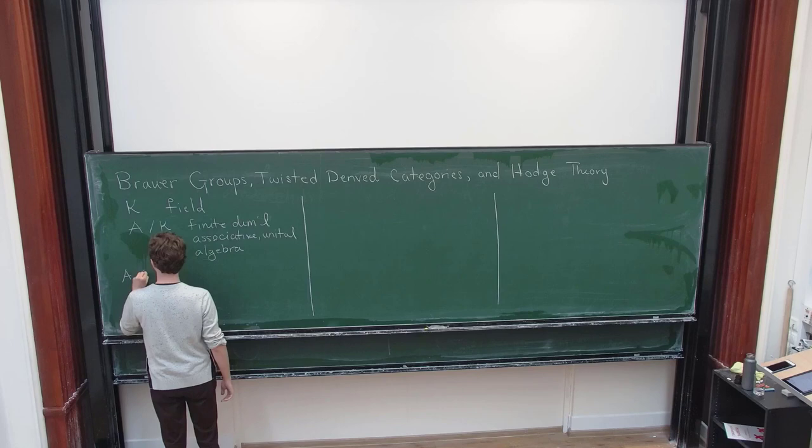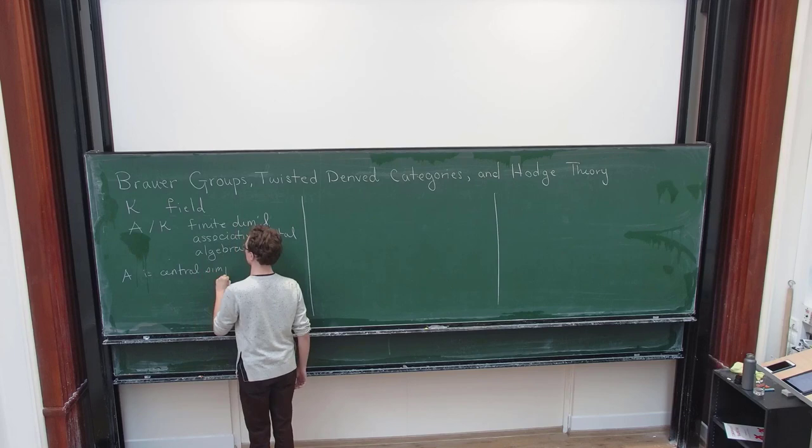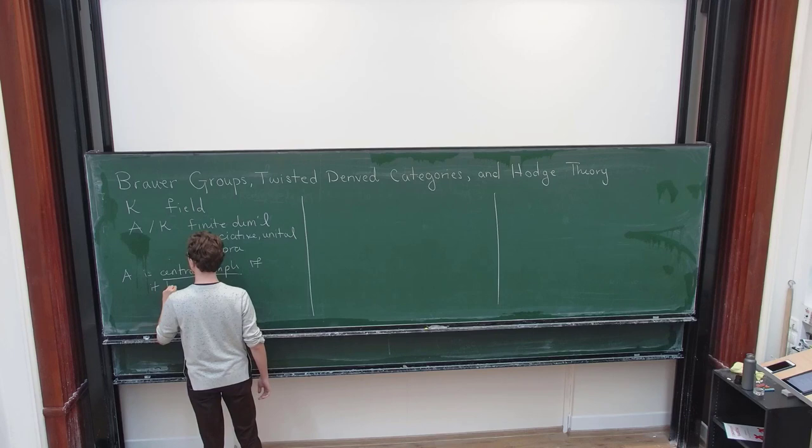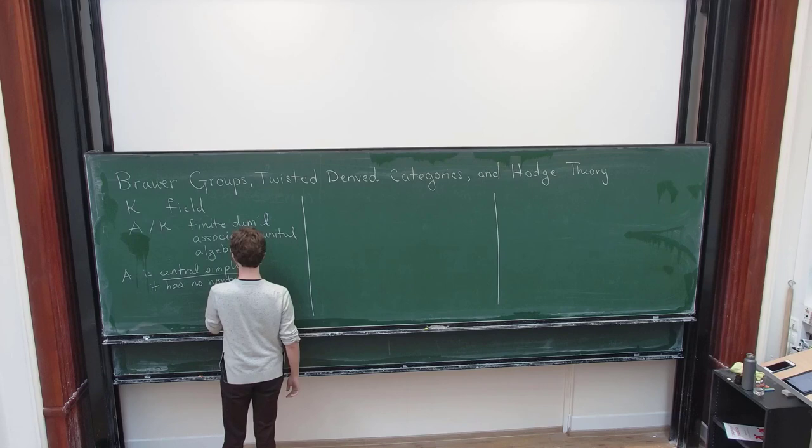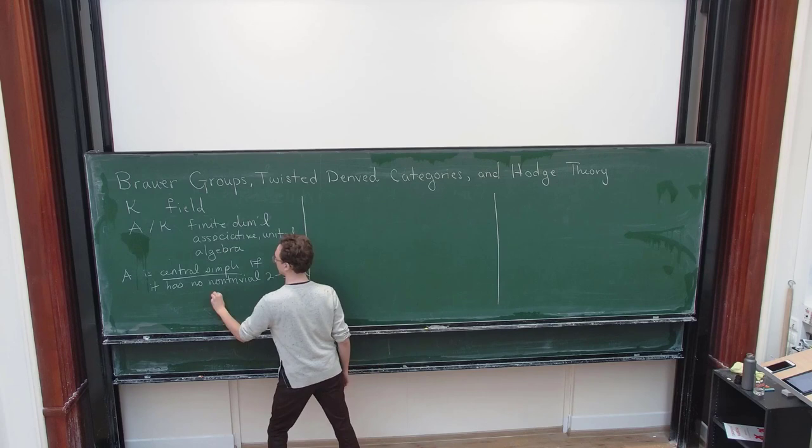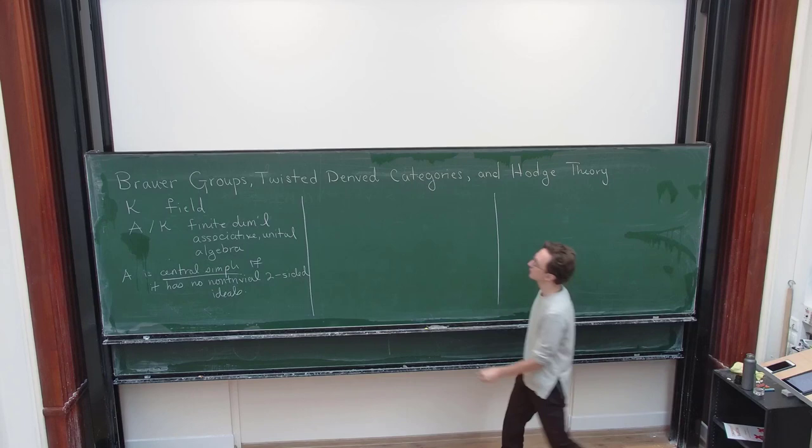Then the basic object of study are central simple algebras. So we say that A is central simple if it has no non-trivial two-sided ideals. Non-trivial meaning it has no two-sided ideals aside from itself and zero.